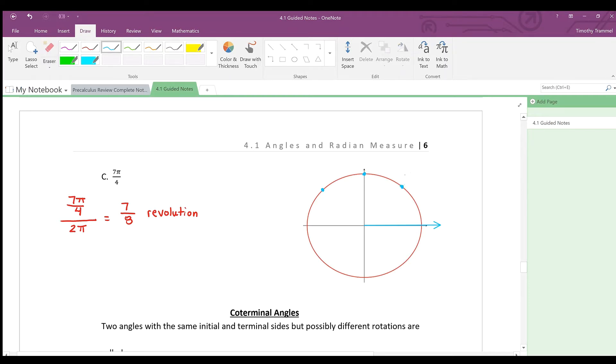There we go. So here's 1 eighth of a revolution, 2 eighths of a revolution, 3 eighths, 4 eighths, 5 eighths, 6 eighths, and 7 eighths. So I just counted to get here.